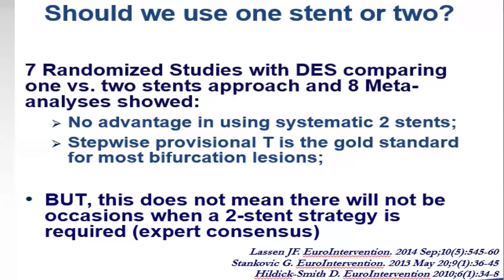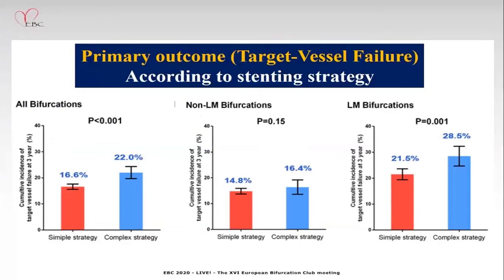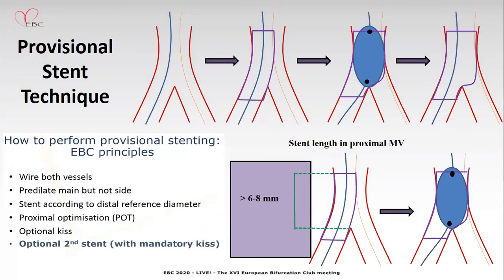Step-wise provisional stenting is the gold standard for most bifurcation lesions. The primary outcome in all bifurcations: simple strategy showed 16.6% versus 22% in complex strategy in non-LM bifurcations, and 14.8% versus 16.4% in complex strategy for LM bifurcation lesions. Complex bifurcation strategy showed significantly increased target vessel failure.